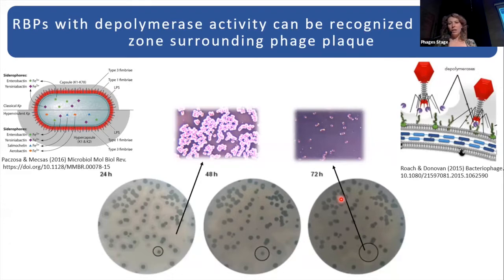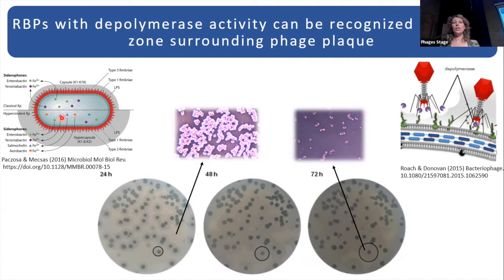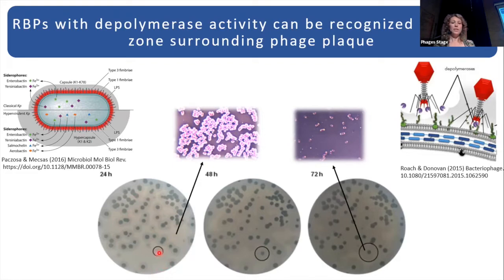RBPs of Klebsiella phages are highly specific to one capsular serotype only, while among Klebsiella species we can distinguish at least 78 capsular serotypes. How can we distinguish phages having these specific RBPs? Very easily — when we look at bacteria on a plate, we can see that around the plaque there will be a semi-transparent halo zone which will be growing in diameter.